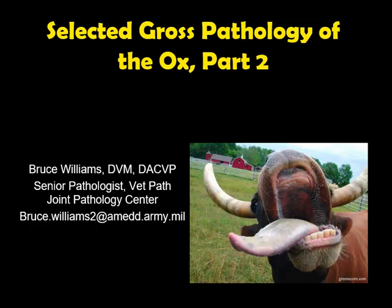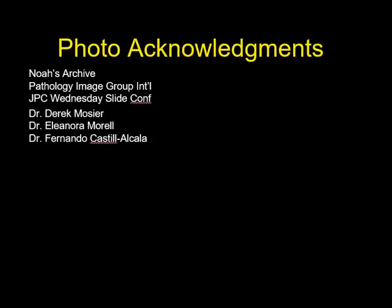Hello, it's Bruce Williams, and today I want to present probably the shortest lecture in my series on Selected Gross Pathology of the Ox. We're going to talk about lesions that are seen in the endocrine system. As I do at the beginning of all of these lectures, I want to thank those folks who have provided me images either through online collections or directly, which enable me to put these little lectures together.